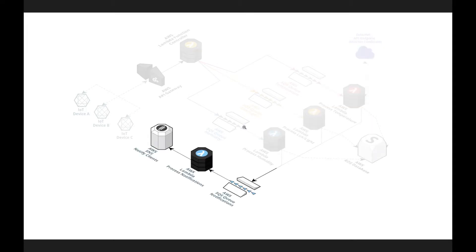The last part in this architecture is the notifications part. We have an entry queue there, which is then consumed by a Lambda function, and a notification Lambda function then sends this information into SNS. The entire job of this part is to send out alerts to clients based on if temperatures are incorrect, if Lux is incorrect, and so forth. These alerts are basically created by the clients themselves, and based on those, the emails will be sent out to respective locations.